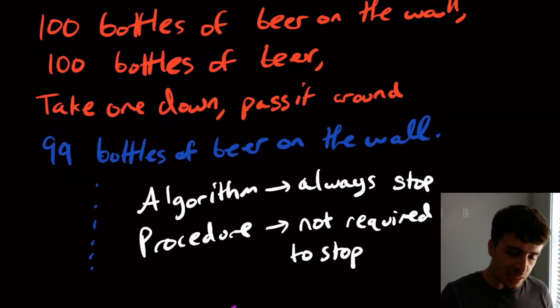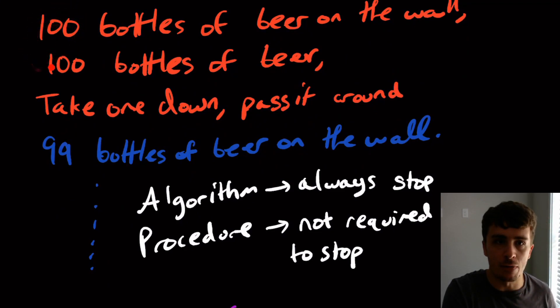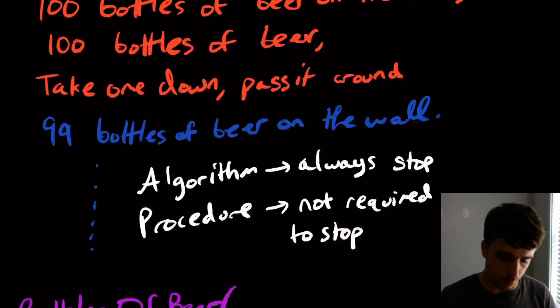It takes some kind of input or not, maybe, does some work for a finite amount of time because it's an algorithm, and it outputs something, namely all of these lines right here. So how would we actually write a function to do this? So I'm going to call this function bottles of beer.